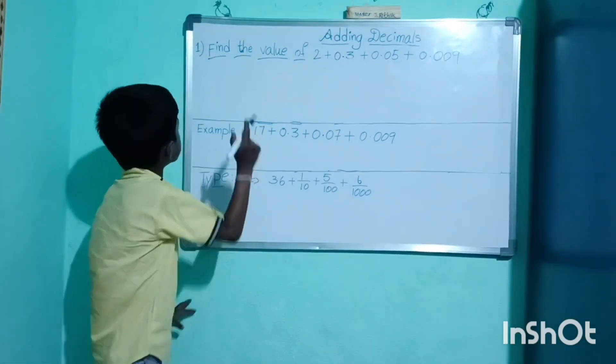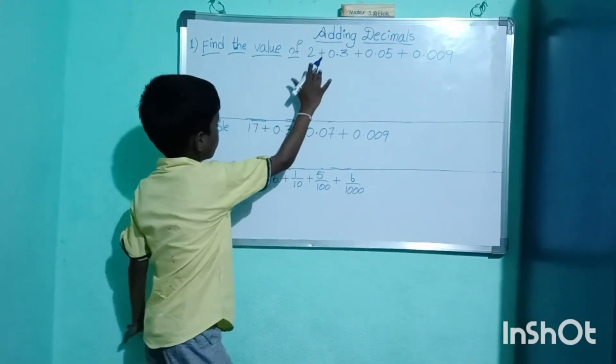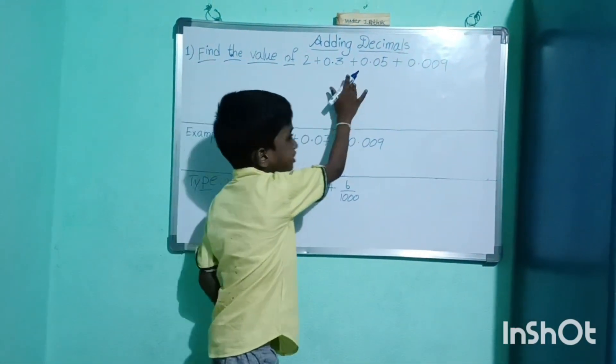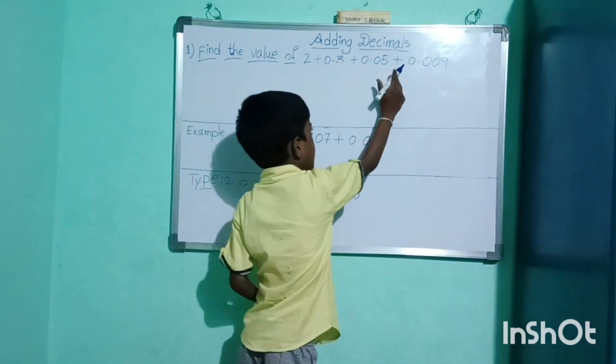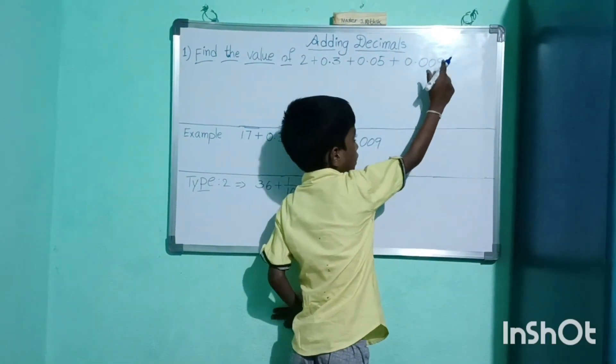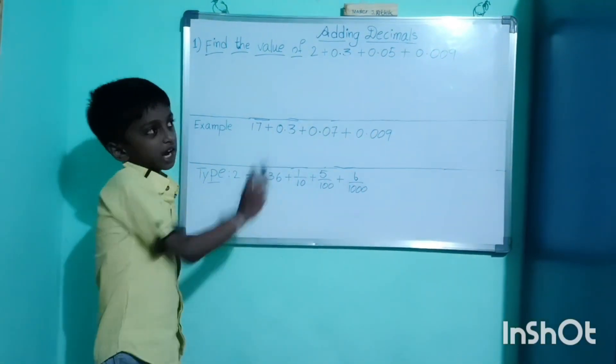The first problem is find the value of 2 plus 0.3 plus 0.05 plus 0.009. The routine process is addition.